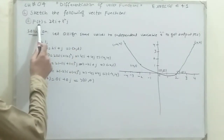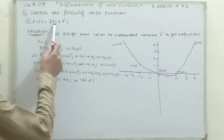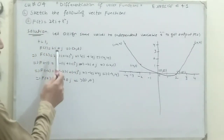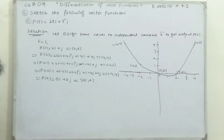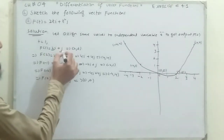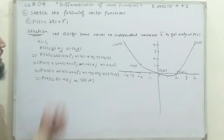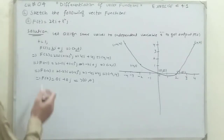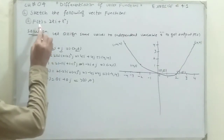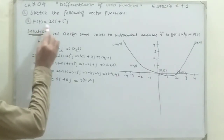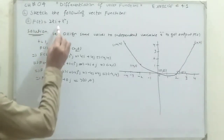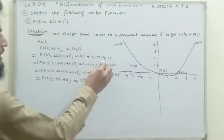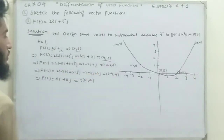If I put t = 1, it becomes 2i + j. So the output value of x is 2 and y is 1, giving the ordered pair (2, 1). Now if I assign t = 2, it becomes 2×2 = 4, and 2² = 4, so the required ordered pair is (4, 4).